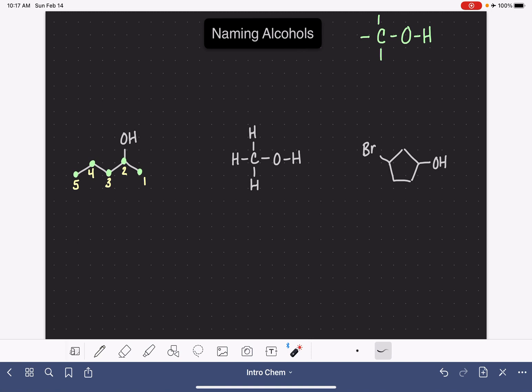This molecule doesn't have any substituents on it or branches, so we don't have any other naming that we need to do. We can just jump right straight into the name. Just like an alkene or an alkyne, we want to start by locating the position of the alcohol. It is on carbon number two. And then we are going to name the parent chain based on the number of carbon atoms. Five carbon atoms, if it was an alkane, would be a pentane.